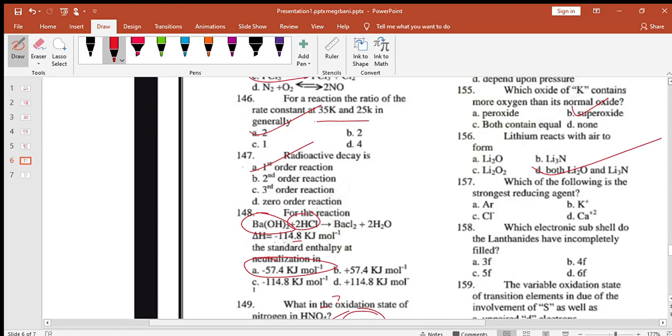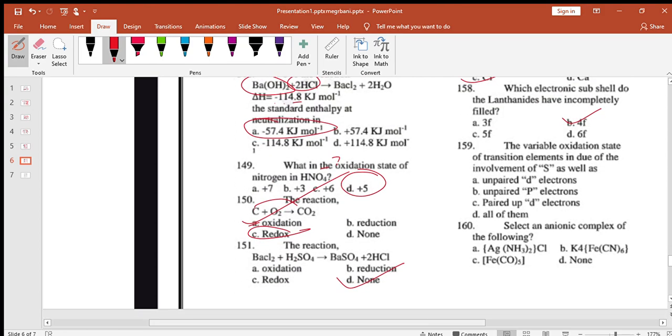Which electron exception do the lanthanides have? Incomplete lanthanides, you have 4f. The variable oxidation state of transition element is due to involvement of s as well as n-1 d electrons. Select an anionic complex, which is complex which is negative.